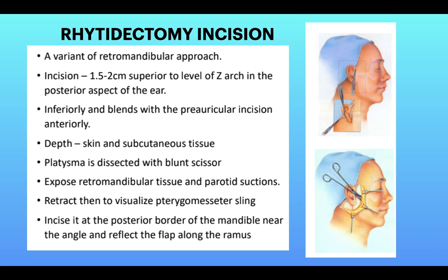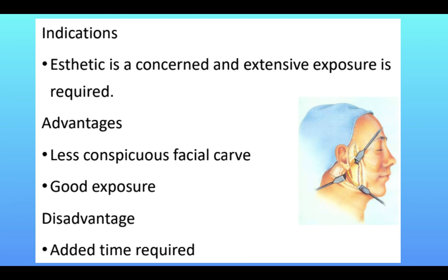Ritidectomy incision: this is a variant of the retromandibular approach — essentially a combination of the pre-auricular and retromandibular approaches. The incision is 1.5 to 2 cm superior to the level of the zygomatic arch in the posterior aspect of the ear, blending inferiorly with the pre-auricular incision. Depth is to the subcutaneous tissue. The platysma is dissected with blunt scissors to expose the retromandibular tissue and parotid. The parotid is retracted to visualize the pterygomasseter sling, which is incised at the posterior border of the mandible near the angle to reflect the flap along the ramus anteriorly. Indications: where aesthetics are of concern and extensive exposure is required. Advantage: less chance of facial nerve damage and very good exposure. Disadvantage: added operative time.